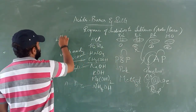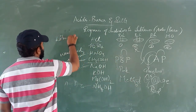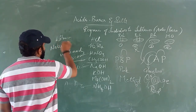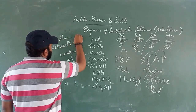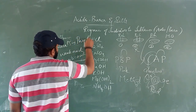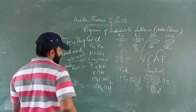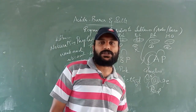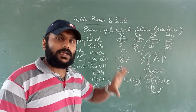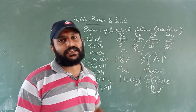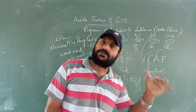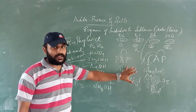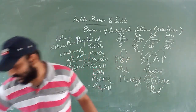One more important point: litmus in a neutral solution shows purple color. If the substance is an acid, litmus gives red color. If it is a base, litmus gives blue color.